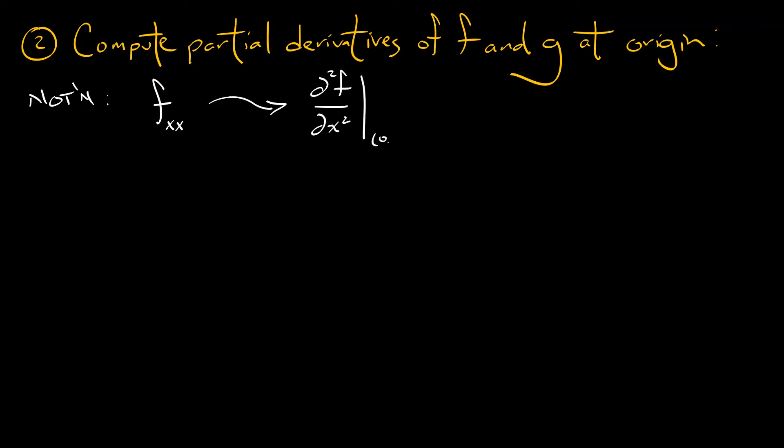Okay, next step is we start computing partial derivatives of f and g and evaluating them at the origin. So the notation that we're going to use is a subscript notation. So if I write f subscript xx, what that really means is the second partial of f with respect to the x variable, again, evaluated at the bifurcation point, at the origin.